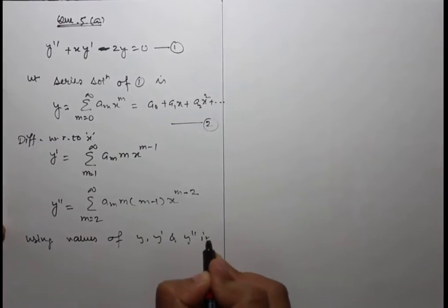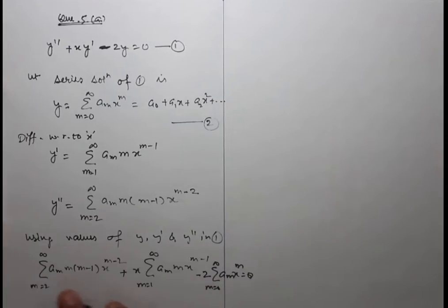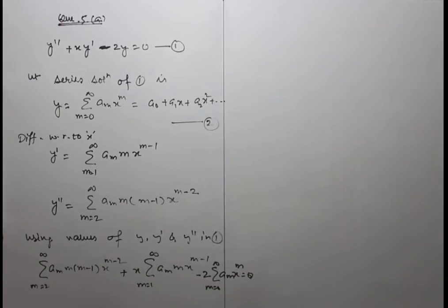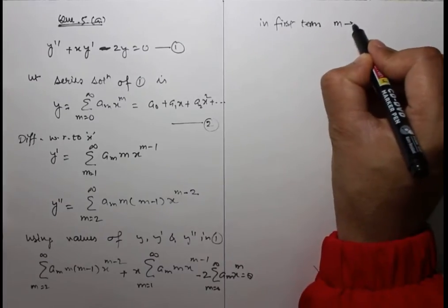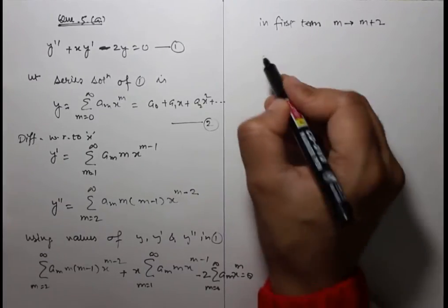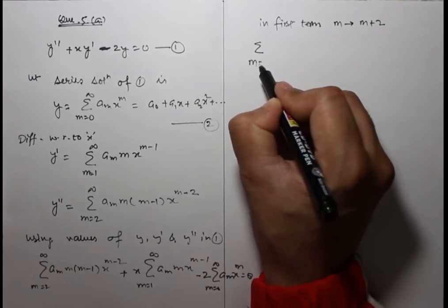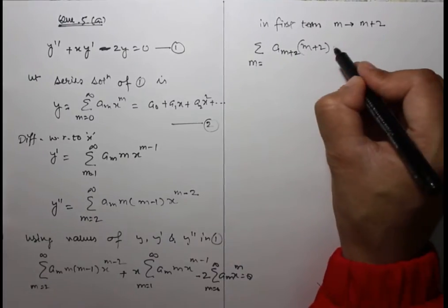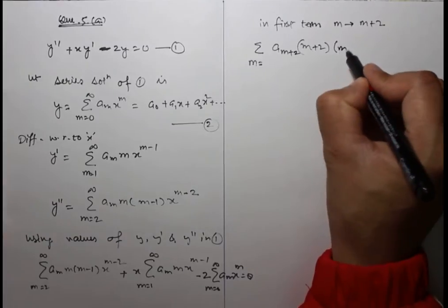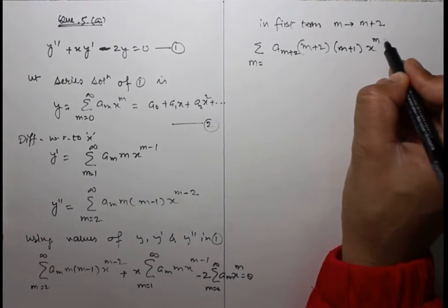Using the values of y, y', and y'' in equation 1, we substitute and re-index the series. Replacing m with m+2 gives terms with (m+2)(m+1) x^m.